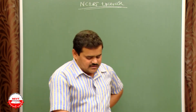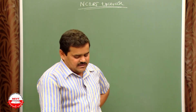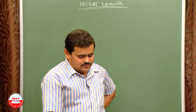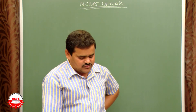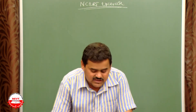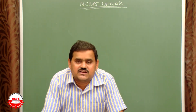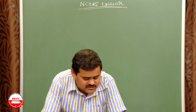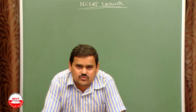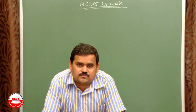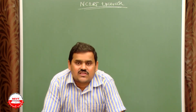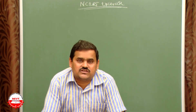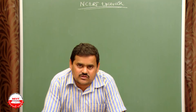Part (b): Pragya makes a saturated solution of potassium chloride in water at 353 K and leaves the solution to cool at room temperature. What would she observe? At 353 K the solubility is 167 grams, but as the solution cools, the temperature keeps falling, and the crystals of potassium nitrate will get deposited at the bottom.